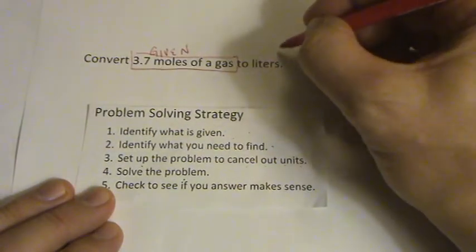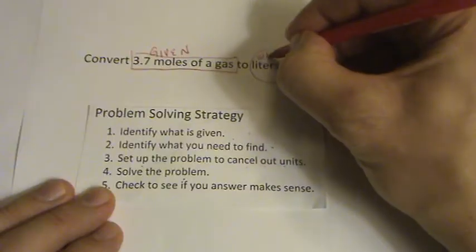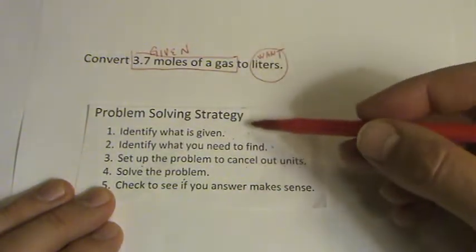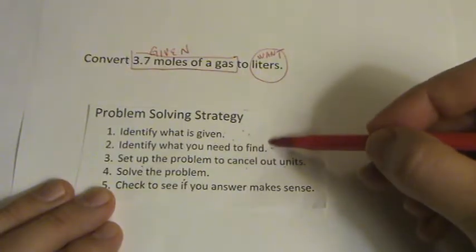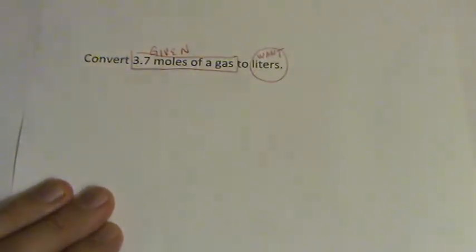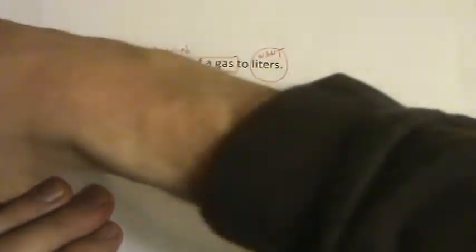And then we want to figure out what we need to find. And we want to find how many liters we end up with. So once we know what's given, what we need to find, let's set the problem up so we can cancel out the units. We'll use a conversion factor to do that. So let's set it up.